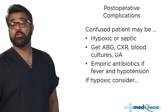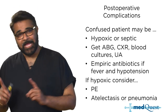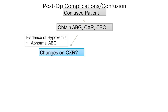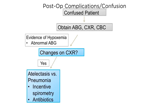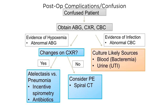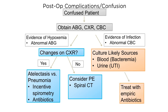For the post-op confused patient, run through this algorithm: get the ABG, chest X-ray, and CBC. If there is evidence of hypoxia with an abnormal ABG, look at the chest X-ray — if there are changes, look for atelectasis or pneumonia, use an incentive spirometer and start antibiotics. If the chest X-ray is clear, consider PE with spiral CT. If there is evidence of infection — possibly an abnormal CBC — look at blood and urine culture sites and treat with empiric antibiotics.